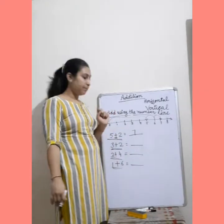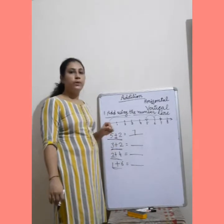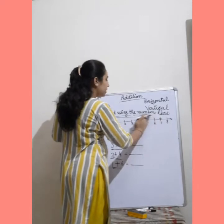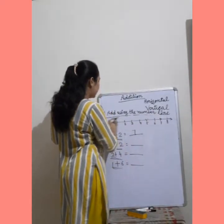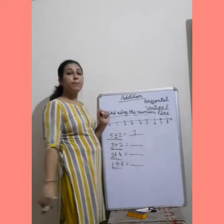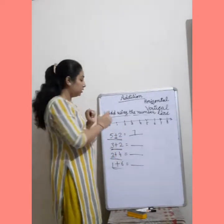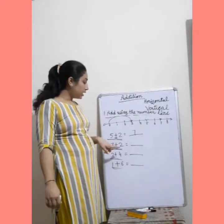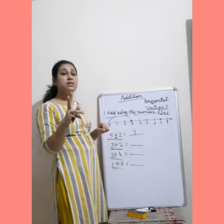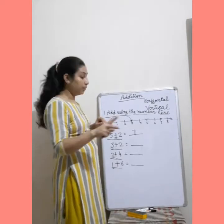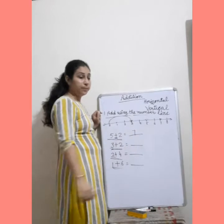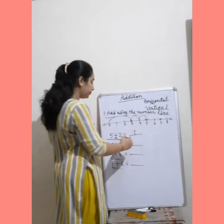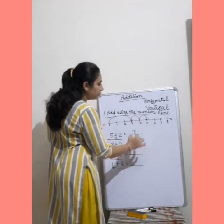Let's take one more example — 3 प्लस 2. अब देखो 3 प्लस 2 में आप कैसे करोगे number line का use करते हुए? First number क्या है आपका? 3. 0 से सीधा 3 पे jump करना है. Next digit क्या है? 2. तो आपने 2 step आगे जाना है — 4, then 5. Your answer is 5, and right here 5.